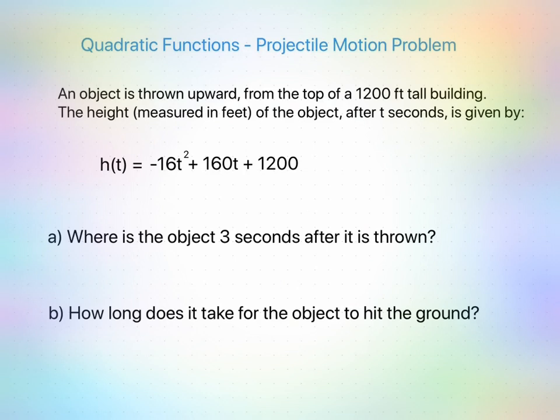So we have an object that's being thrown upward from the top of a 1,200 foot tall building. Now the height measured in feet of the object after t seconds is given by this equation.